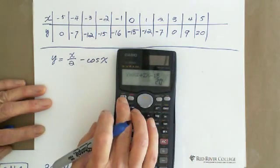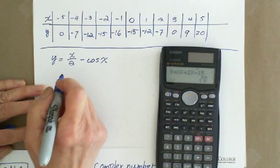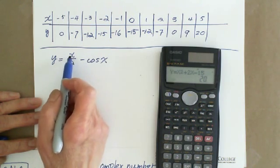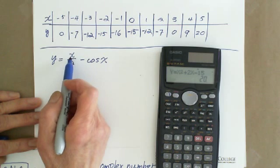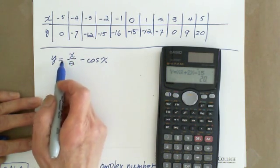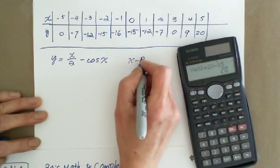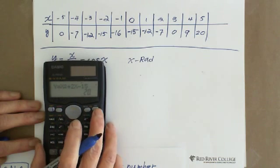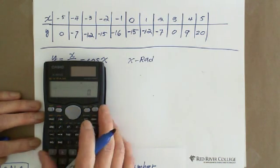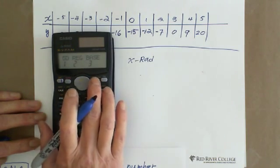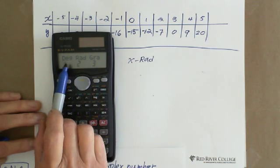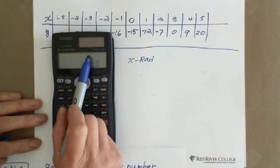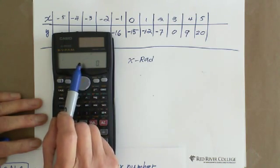One thing you need to be careful about: in the expression Y = X/2 - cos(X), the X inside cosine is an angle. So X cannot be in degrees — you need to put it in radians. To do this, go to Mode, then press 4 for radians. The display will show an 'R' at the top indicating radian mode is active.